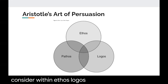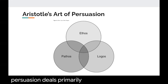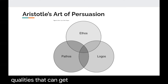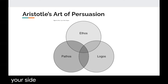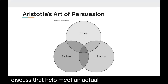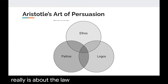Logos in Aristotle's art of persuasion deals primarily with logic. So here we're talking about facts. What are the reasoning qualities that can get someone to be persuaded to your side? What are some of the things that you discuss that help meet an actual need? Logos really is about the logic behind the argument that you're trying to make.